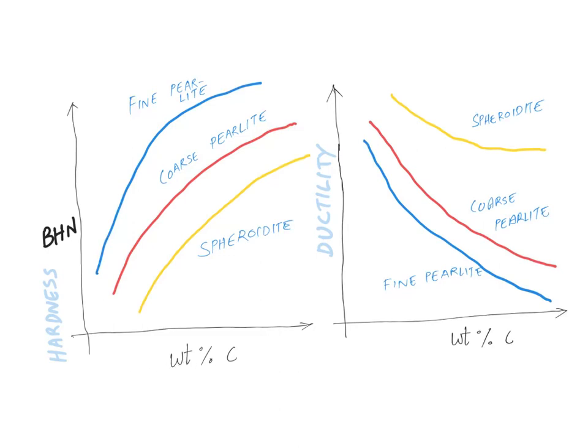Coming back to here, so you add more carbon, your hardness increases for all these microstructures, and the reason is the formation of cementite. Now coming to ductility.